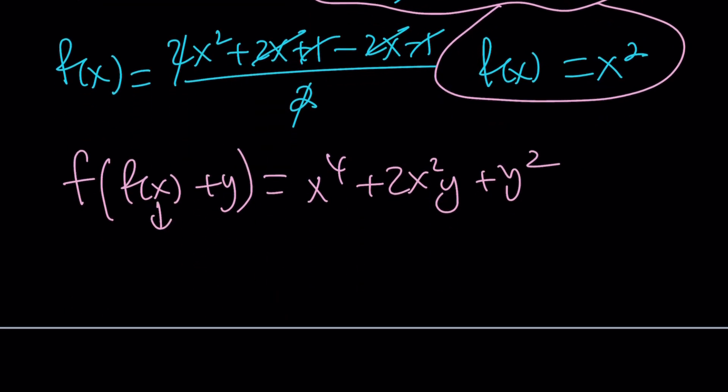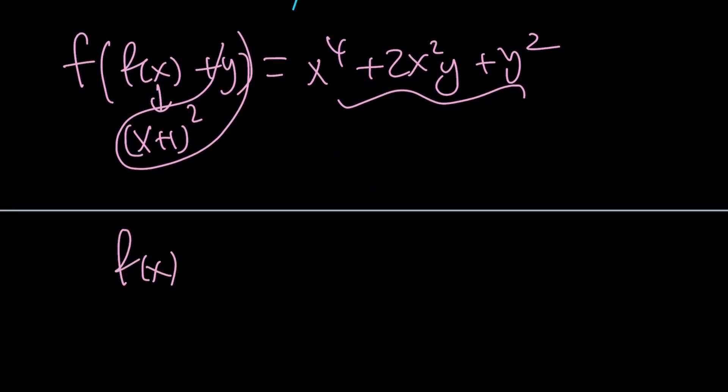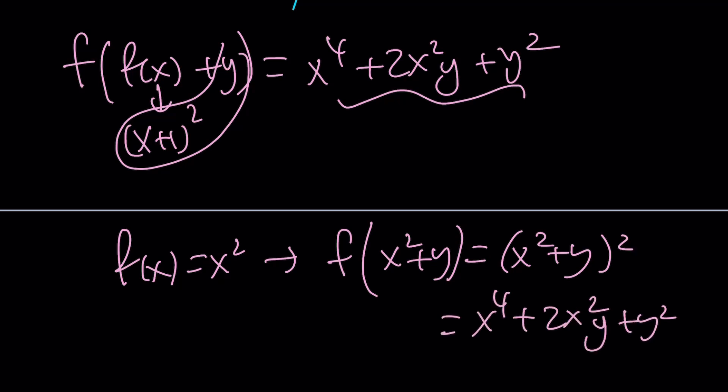But guess what? f of x equals x squared satisfies this equation because f of x squared plus y, by definition, is x squared plus y squared, and that's equal to x to the fourth plus 2x squared y plus y squared, which is what we have on the right-hand side.